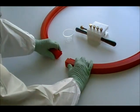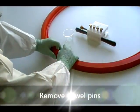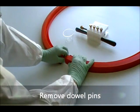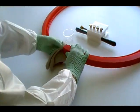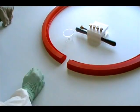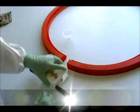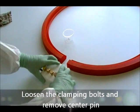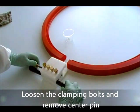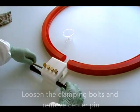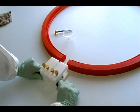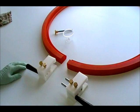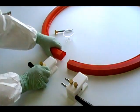First remove the dowel pins. Loosen the four clamping bolts and remove the center pin. Pull apart the tool and place each end over the seal.